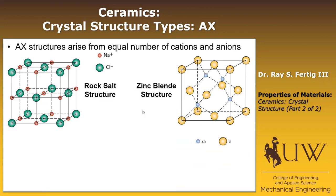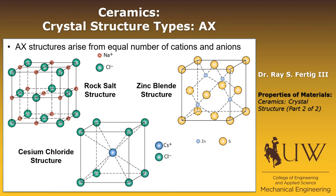Another is referred to as the zinc blende structure. It looks similar in that the anions are sitting at the sites of an FCC lattice, but now the cations — the zinc cations — sit at the tetrahedral sites in the structure. And then finally, there's the cesium chloride structure, where we have a cubic lattice made up of the chlorine atoms with the cesium atom in the center at the octahedral site.